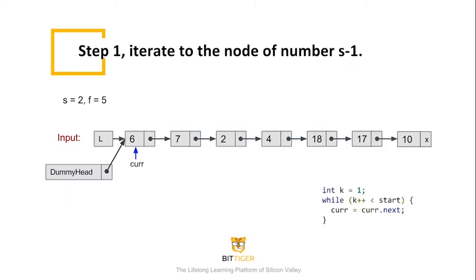Next, we will need to find the head of the sublist. Since we know the number of the head node of the sublist, as the code shown on the lower right of this slide, we can iterate from the head node through the list until we get to the node just before the head node of the sublist. Please remember, in this step, we do not go to the head node, but to the node just before it.